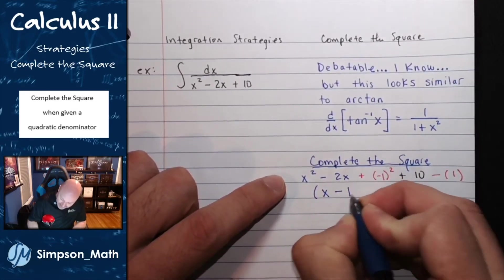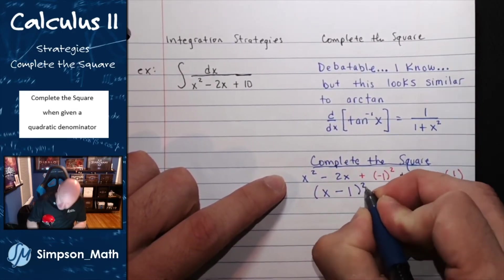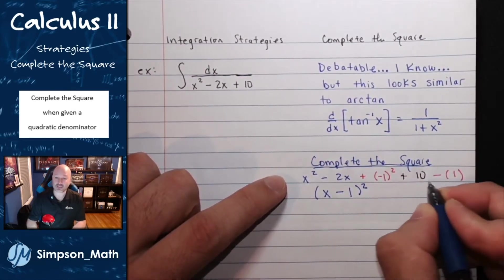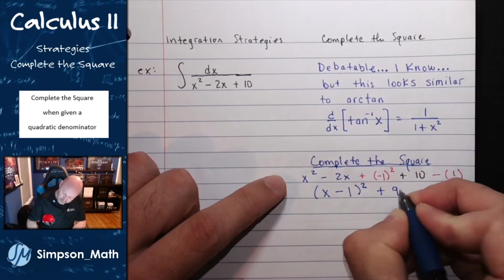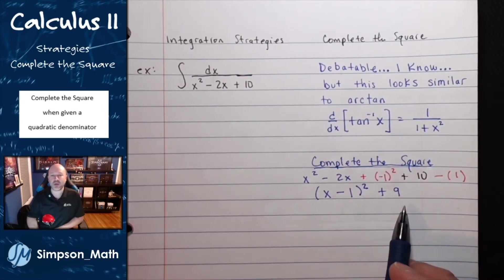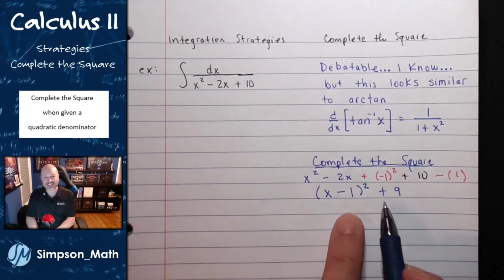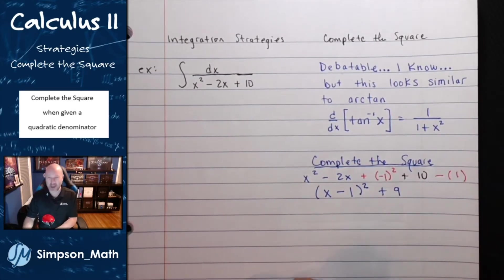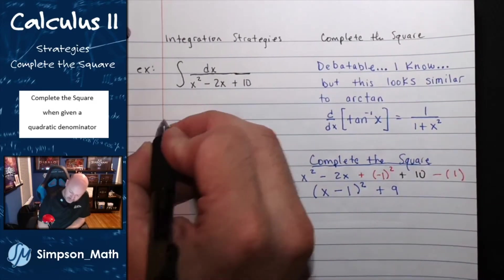This is the binomial x minus 1 squared, and then I'll add these constants, that's a plus 9. So this is what I mean by completing the square. And notice, this sort of kind of looks like that form, a little bit closer.